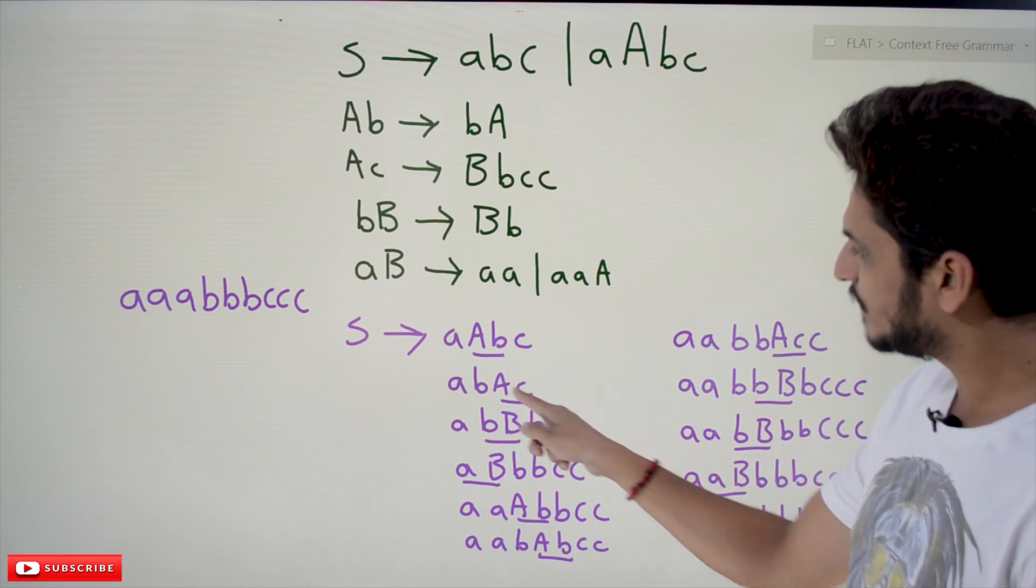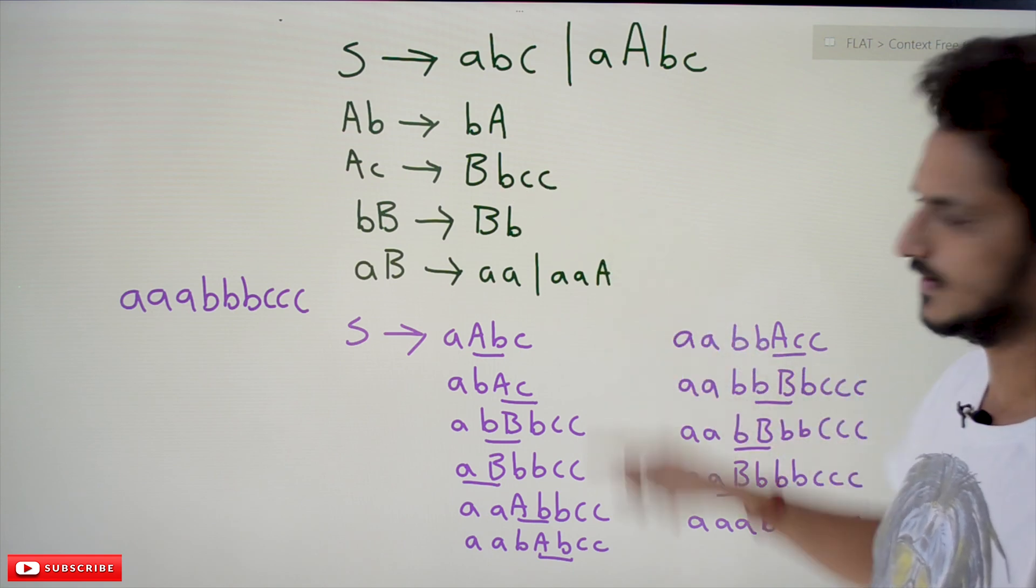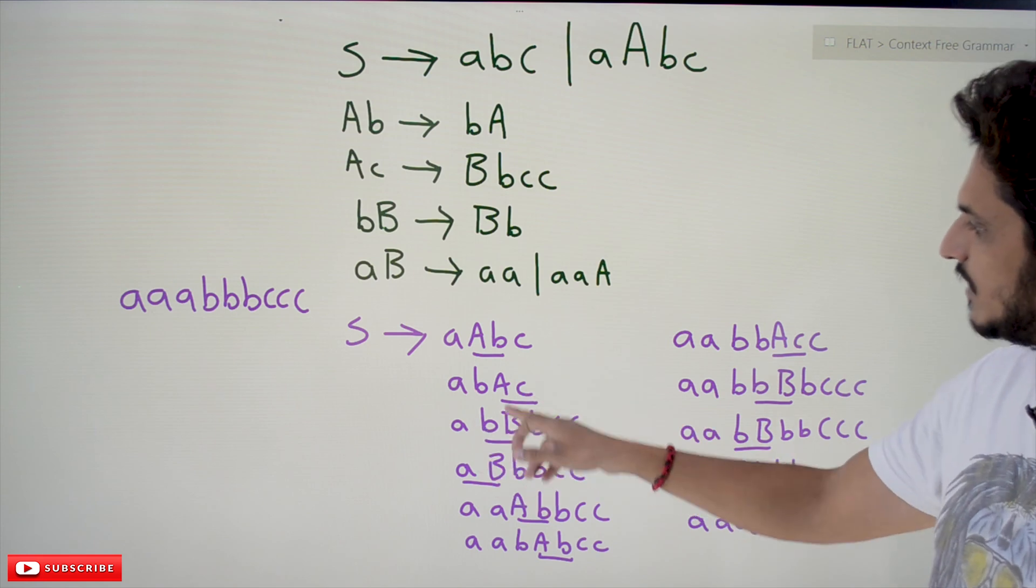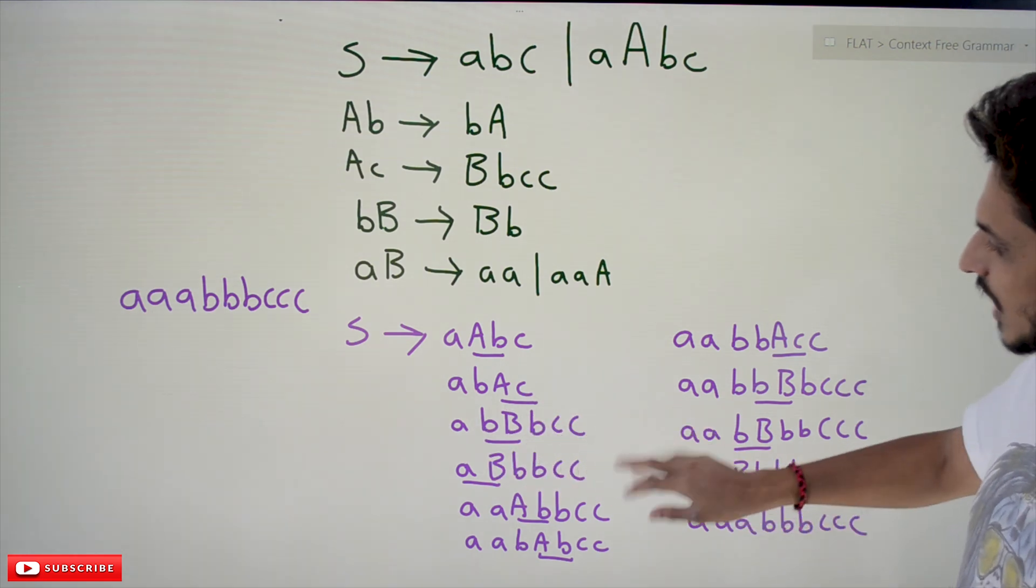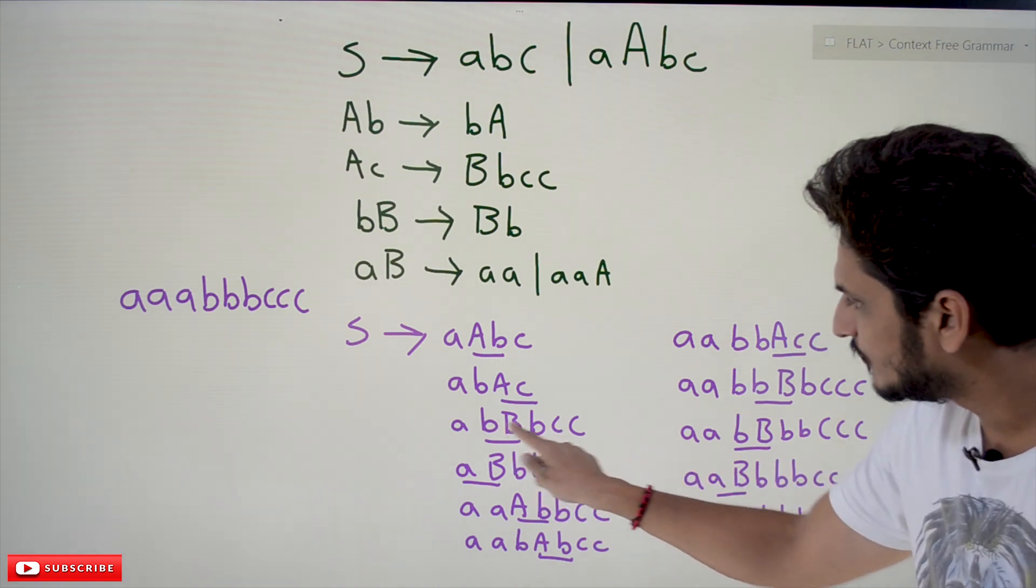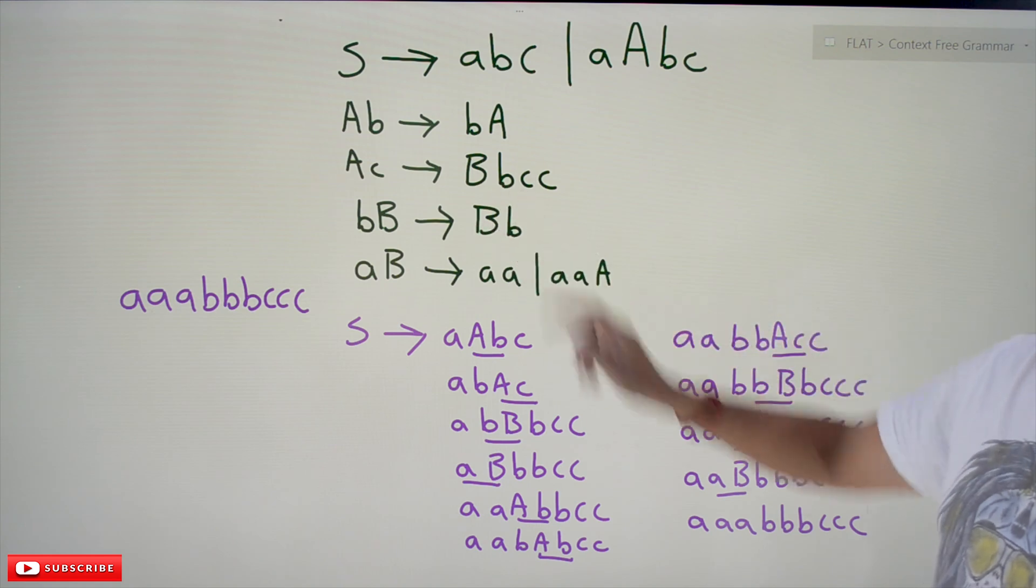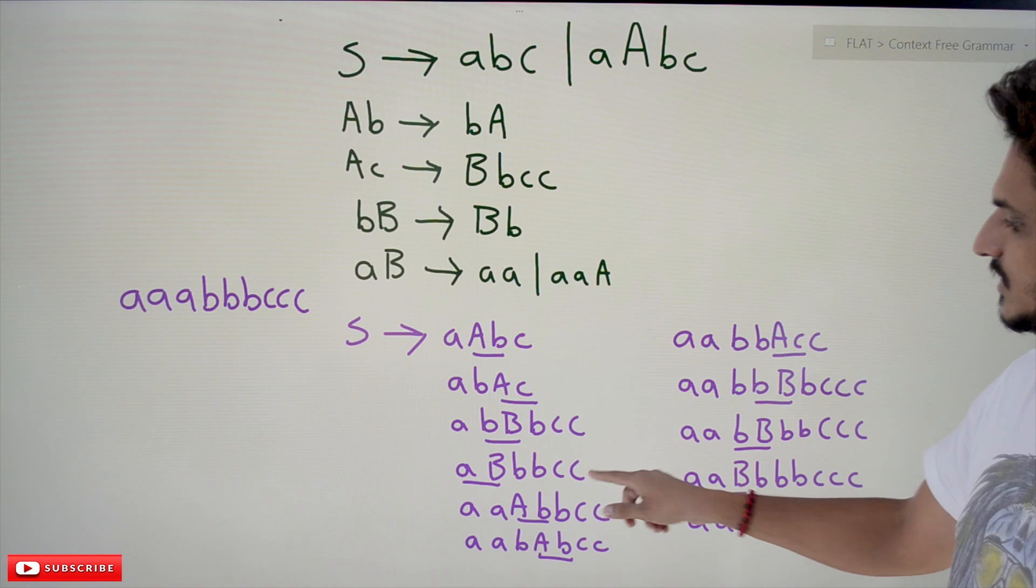In place of Ac, we take BbcC. So the next step is abBbcC. Then bB converts to Bb, so now we have aBbbcC.